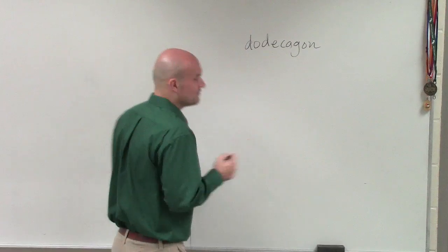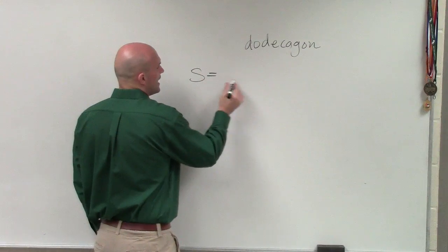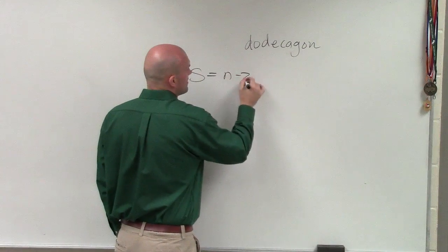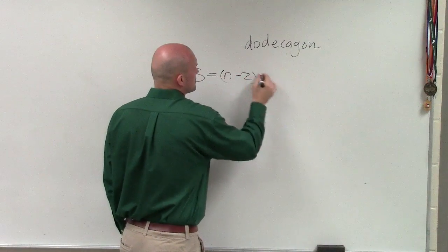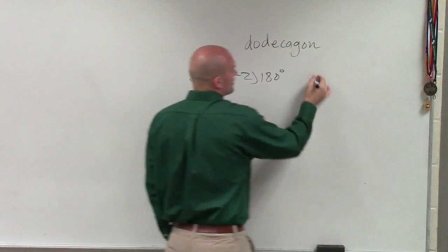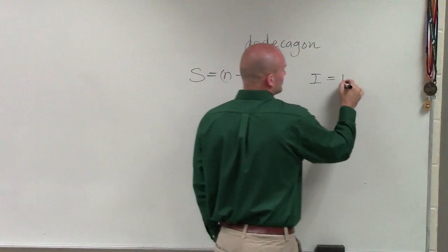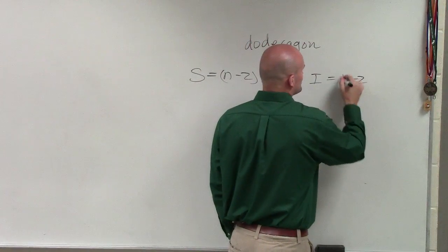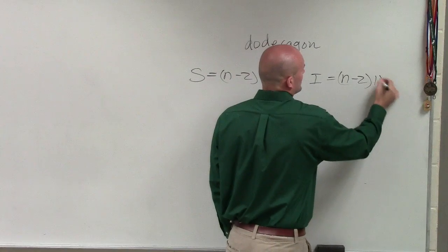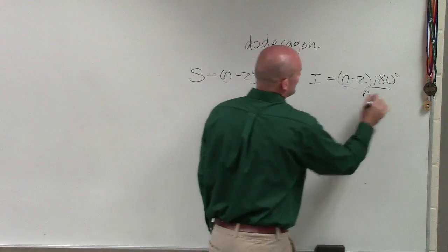So now, there are two different formats that we talked about, ladies and gentlemen: S equals n minus 2 times 180, and the individual angle equals n minus 2 times 180 degrees over n.